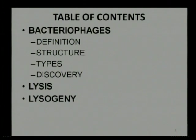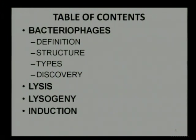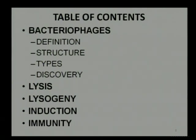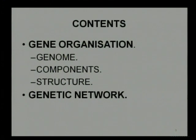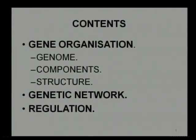The life cycle stages include lysis, and the other important stage which is the main focus of our discussion — lysogeny. Some of the important events related with lysogeny are induction and immunity. Our topic on regulation mainly depends on genetic organization and gene arrangements, including the genome, various components of these genomes, the structure of a typical bacteriophage genome, and what is the genetic network — meaning how the various genes of bacteriophages interact with each other, and ultimately how all these genes together regulate the process of lysogeny.